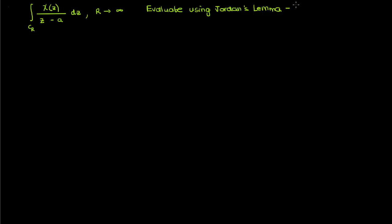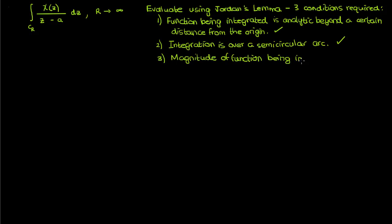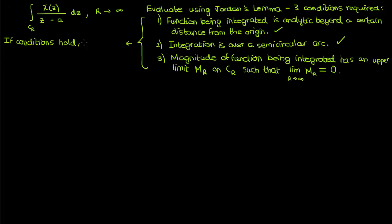In order to apply Jordan's lemma, three conditions are required. The first is that the function we're integrating, chi(z) over z minus A, is analytic everywhere beyond a certain distance from the origin — the function only has a pole at z equals A, and beyond that it's continuous and differentiable. The second is that we're integrating over a semicircular arc, which we obviously are. The third is that the function we're integrating has an upper limit on its magnitude over the semicircular arc C_R, and that upper limit approaches 0 as R approaches infinity. If all three conditions hold, then the integral approaches 0 as R approaches infinity according to Jordan's lemma. The only thing stopping us from straight up applying Jordan's lemma is this upper limit condition, so we're going to have to work on that.